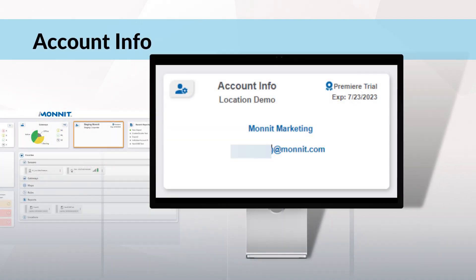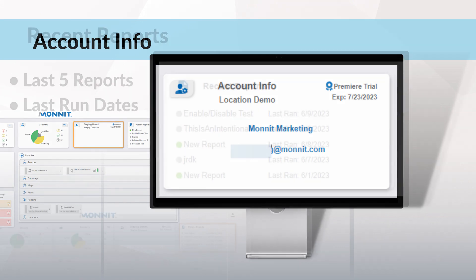Account information is next. This user profile card features user details and account notification updates. From premier membership expiration dates to calibration certificates soon to expire, you'll see it here.